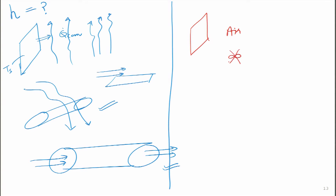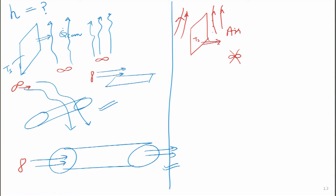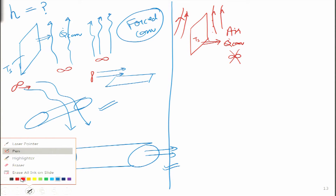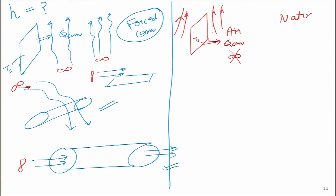We will also study natural convection, where a hot metal plate is surrounded by air with no blower. Even without a blower, once air is heated by the surface temperature T_s, it naturally rises on both sides due to the buoyancy effect, and convective heat transfer still takes place. So whether it is forced convection — which we study first — or natural convection, also called free convection, both will be covered.